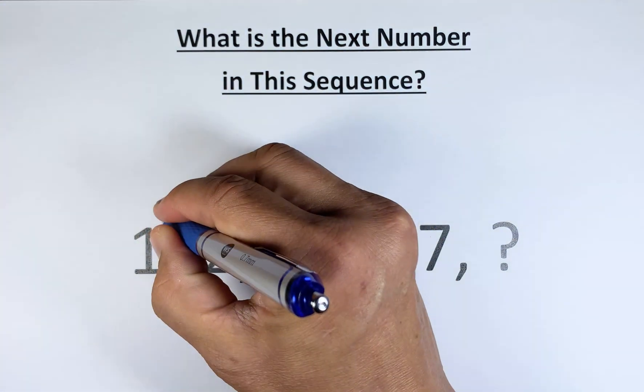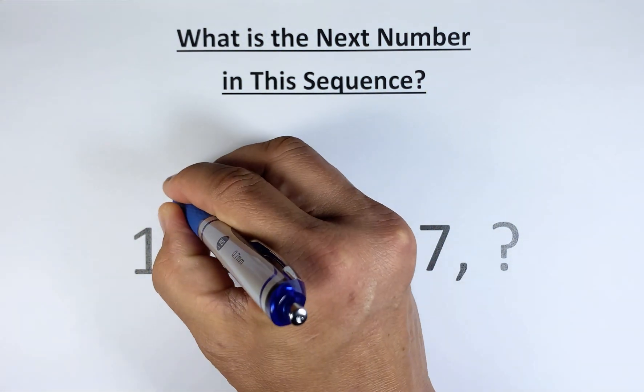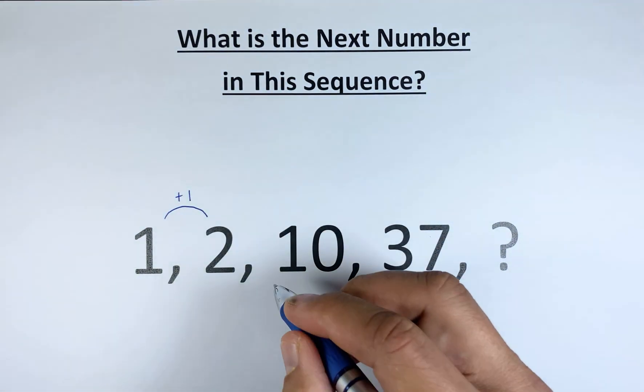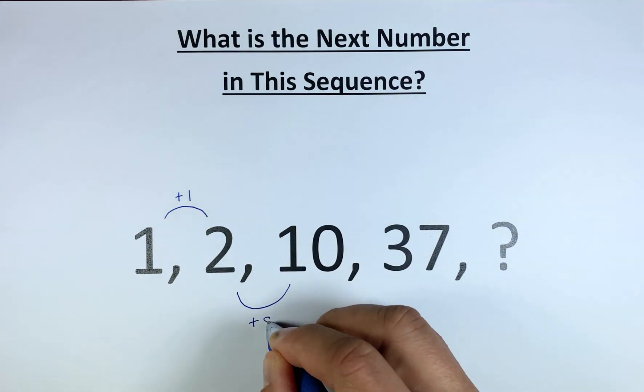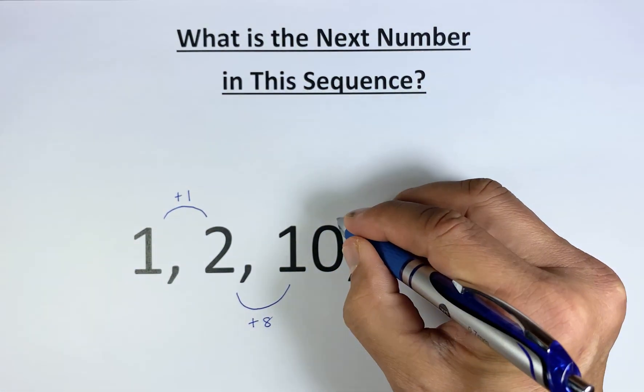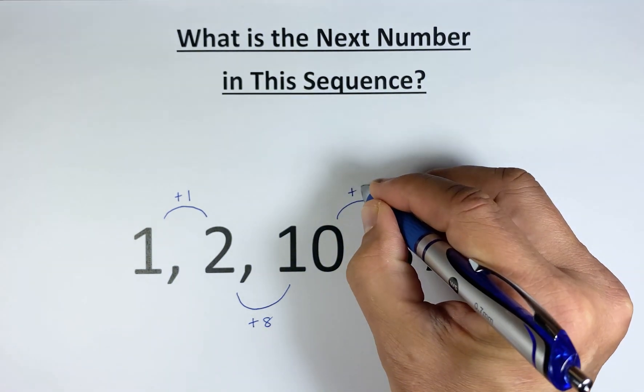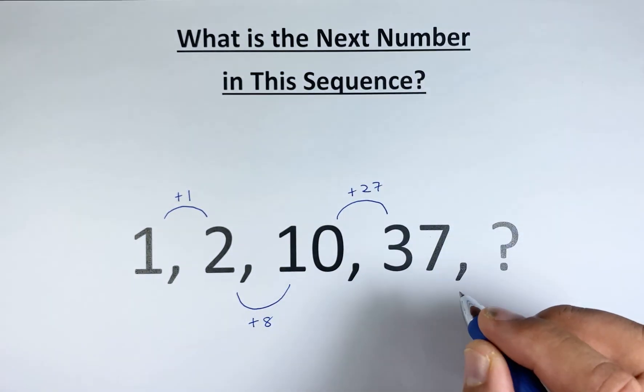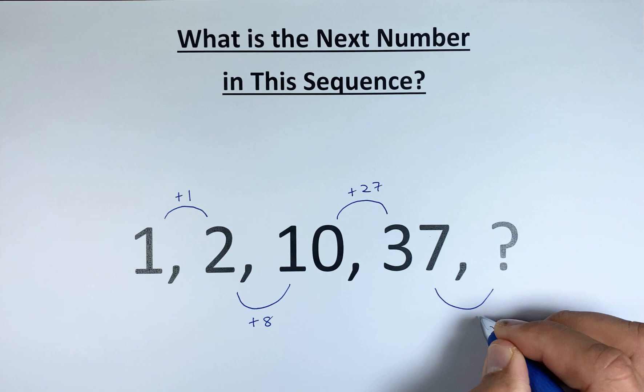To get from 1 to 2, you plus 1. From 2 to 10, you plus 8. From 10 to 37, you plus 27. And then from 37 to the question mark is something we need to find.